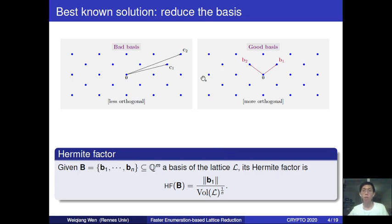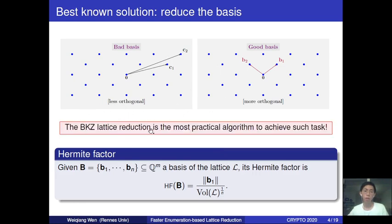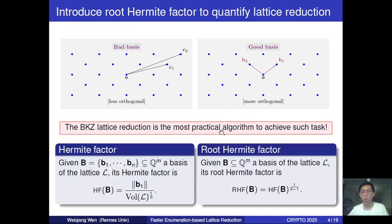In practice, the best known algorithm for reducing the basis is known as BKZ lattice reduction. To quantify how good a lattice reduction algorithm is, one can use the so-called root Hermit factor. It is a normalized version of the Hermit factor normalized by the dimension of the lattice, and this introduces a quantity which is independent of the dimension.